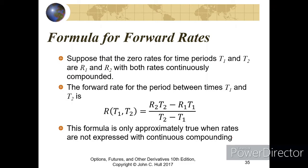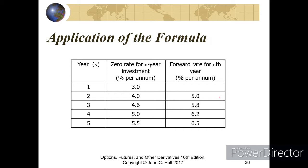There is another formula for the forward rate applicable only when dealing with continuously compounded rates. To find the forward rate from time T1 to T2, use: R_forward = (R2 × T2 − R1 × T1) / (T2 − T1). For example, assume zero rates with continuous compounding: 3% for one year, 4% for two years, 4.6% for three years, and so on.